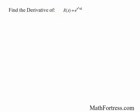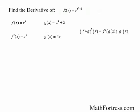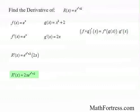Let's try the final example. Find the derivative of r of x equal to e to the power of x squared plus 2. This is a composition of functions. The outer function is e to the power of x and the inner function is x squared plus 2. The derivative of f of x equals e to the x, and the derivative of g of x equals 2x. Applying the chain rule, the derivative of r of x equals e to the power of x squared plus 2 times 2x, giving a final answer of 2 times x times e to the power of x squared plus 2.